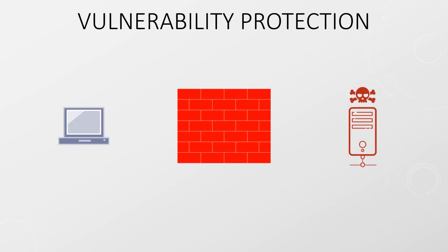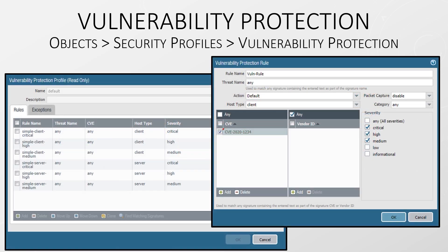Vulnerability protection goes hand in hand with anti-spyware. While anti-spyware looks at traffic leaving the network, vulnerability protection looks at traffic entering the network. In particular, it looks at traffic that is known to exploit security flaws — for example, it will detect traffic that tries to gain access to systems, overflow buffers, execute code, and things like this. This also contains a set of rules, including the name as a signature filter, an action, the host type, category, CVE, vendor ID, and severity. It's nice that you can filter by CVE number or vendor if you want to get specific, and you could even do this to create exceptions.